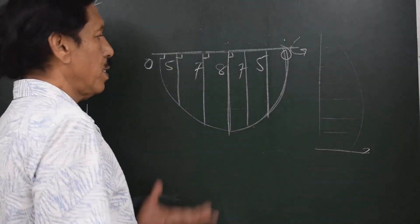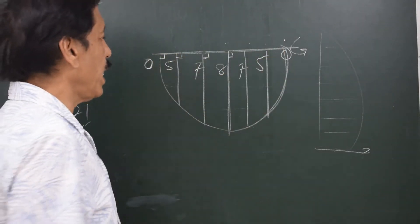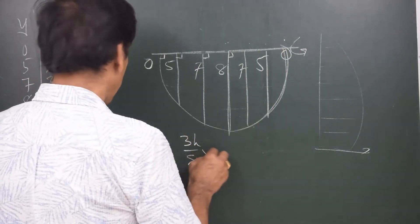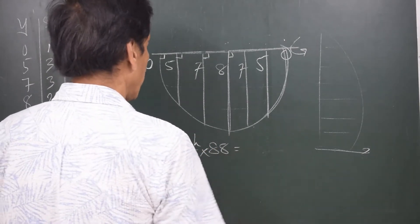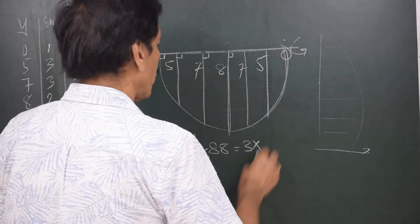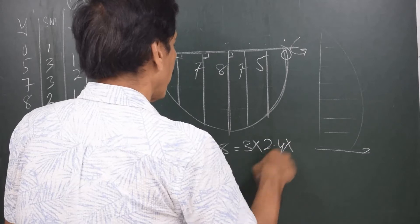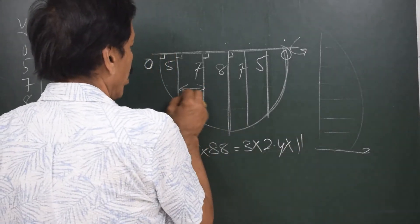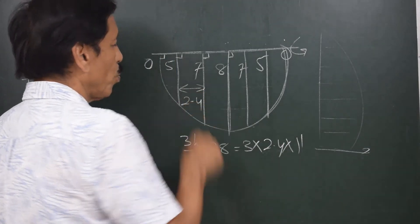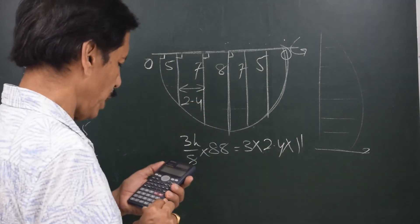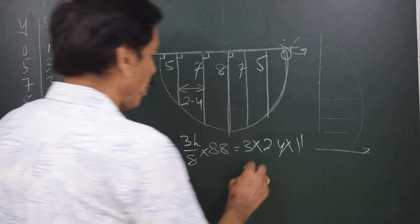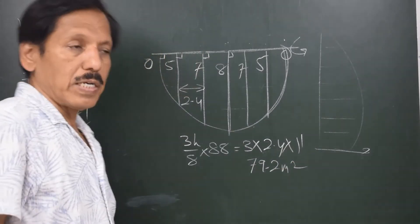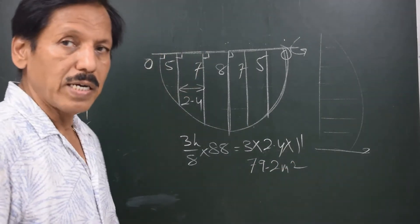If I want to find out the area of this bulkhead, that would be 3H/8 into the sum, which is 88. That is 3 × 2.4 × 88 / 8, assuming the uniform separation between ordinates is 2.4 meters. That gives me 79.2 square meters. So up to here, the calculations are the same as before.